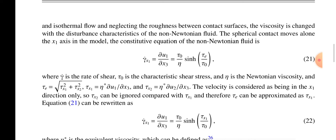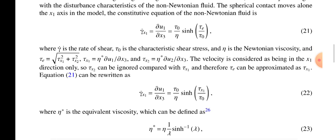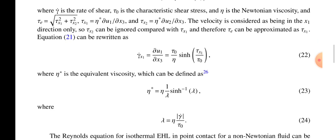τ₀ is characteristic shear stress. η is Newtonian viscosity. τₑ equals the square root of τₓ₁² plus τₓ₂². So τₓ₁ = η(∂u₁/∂x₃). Therefore γ̇ₓ₁ = du₁/dx₃ = (τ₀/η)sinh(τₓ₁/τ₀).